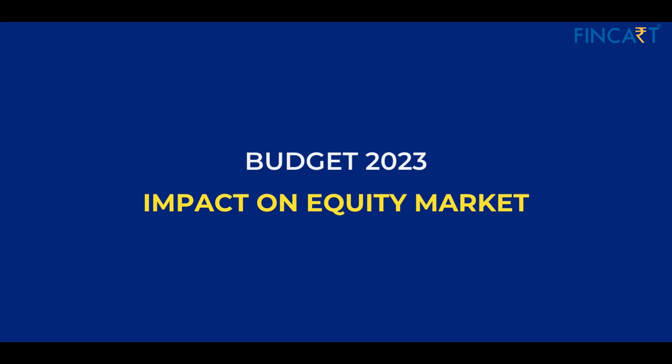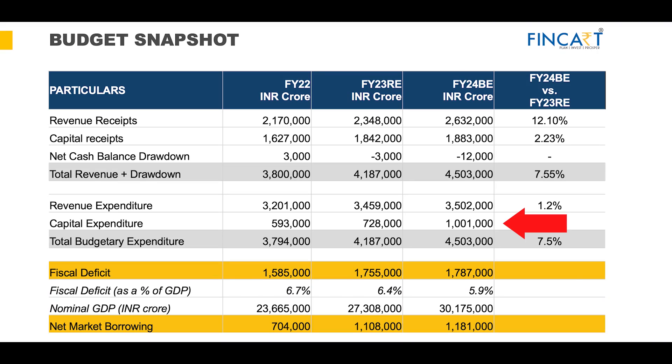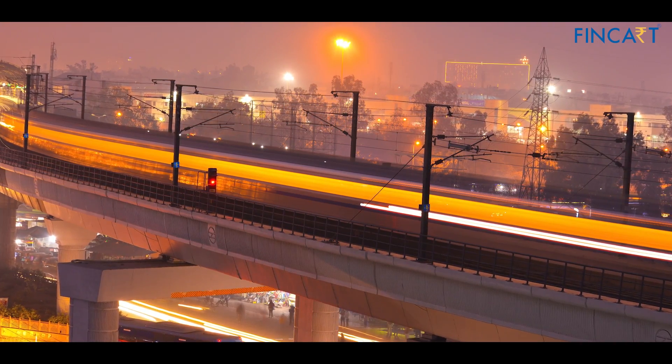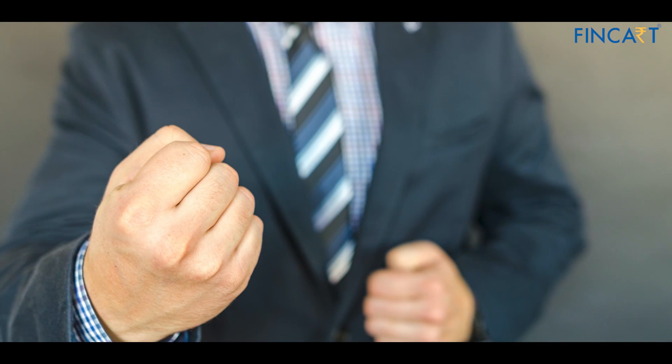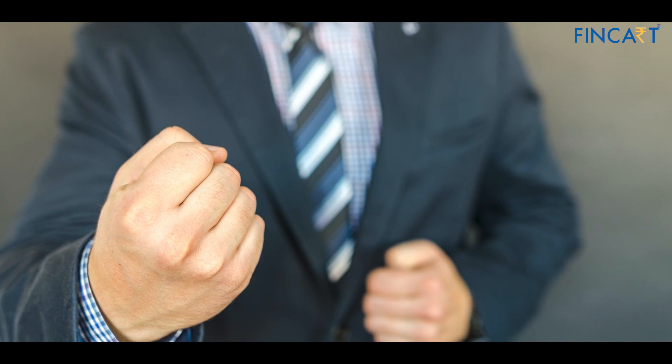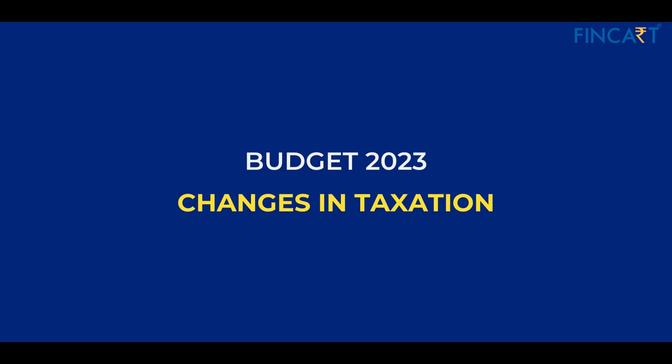Now let us understand the impact on the equity market. The government has given a strong impetus to capital expenditure by increasing it to almost 10 lakh crore. This is a great move because money spent on infrastructure leads to growth of the economy while creating jobs for the youth. It is a very well-directed budget. There were quite a few changes at the personal income tax level as well.